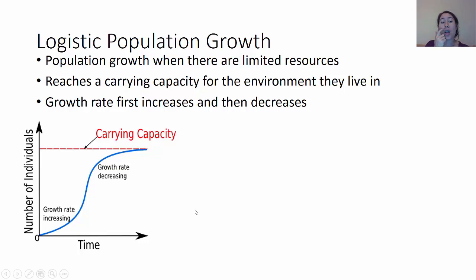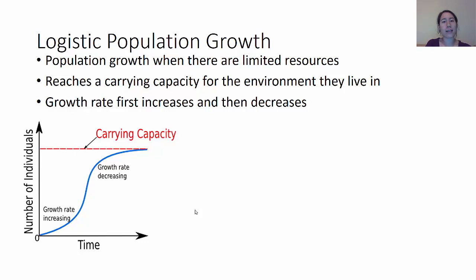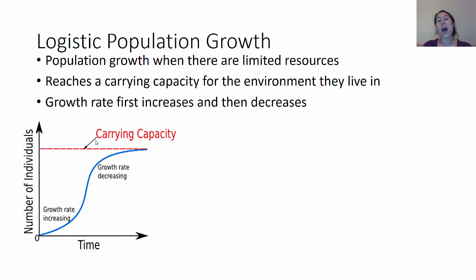In contrast, we have logistic population growth — population growth when there are limited resources. This is the majority of situations we'll see because most organisms are not living with basically unlimited resources. And that population is going to reach a carrying capacity for the environment it lives in. You can see the carrying capacity marked right here — it's the upper limit on how many organisms this population and environment can support.